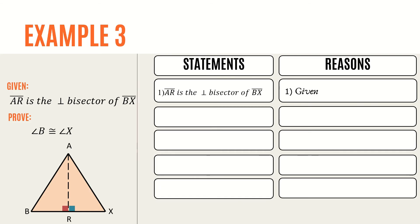From the given, we can deduce that side BR is congruent to side RX. We can show this by marking side BR and side XR with two tick marks each. The reason is the definition of perpendicular bisector — aside from creating two right angles, it also creates two sides with equal length. Those sides are side BR and side XR. We can also see from the illustration that the two triangles have a common side, which is side AR.